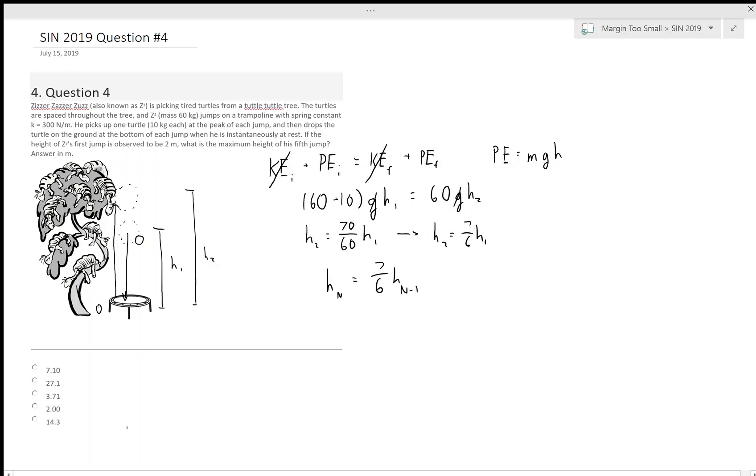This gives us a geometric sequence. We can just plug in h1, which we know is 2 meters, and just recursively calculate h2, which is 7 over 6 of 2, and then h3, and then h4, and then h5. Or we can use the geometric sequence formula, where h5 is equal to the starting value times 7 over 6 to the power of 5 minus 1, which we will calculate as 3.71, which just so happens to be one of our answer choices.